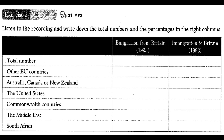Canada, or New Zealand. 22% of them came from other Commonwealth countries. And 8% from the USA. 3% came from the Middle East. And 3% from South Africa.